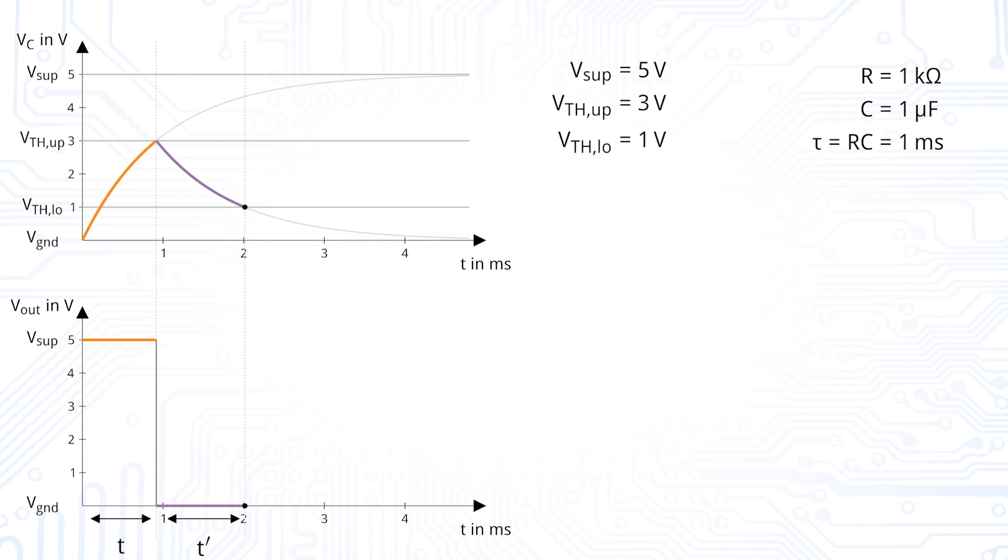Now we start at the lower threshold voltage and the RC structure is tending towards the positive supply voltage. Again, we want to know the time when we reach the upper threshold voltage.